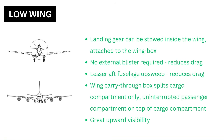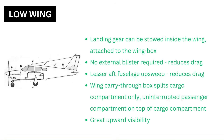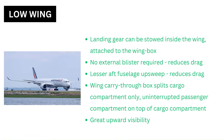Low wing design. In this type, the landing gear can be stowed inside the wing. The landing gear is usually attached to the wing box, which is a strong structure already. Other ways are to retract the landing gear in the wing fuselage fairing or in the nacelle. This eliminates the need for an external blister and thus reduces drag. Due to the higher placement of the fuselage, lesser aft fuselage upsweep is required, which is beneficial as it reduces drag. In most low-wing airliners, the wing carry-through box passes through the fuselage and splits the cargo compartment only.